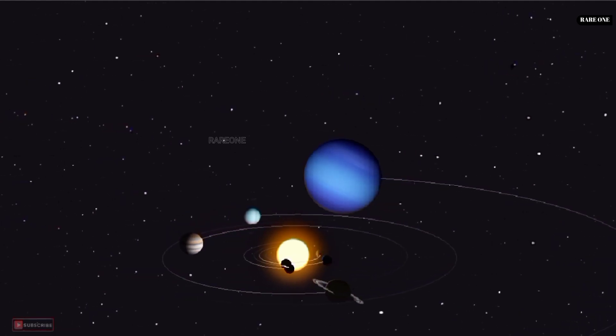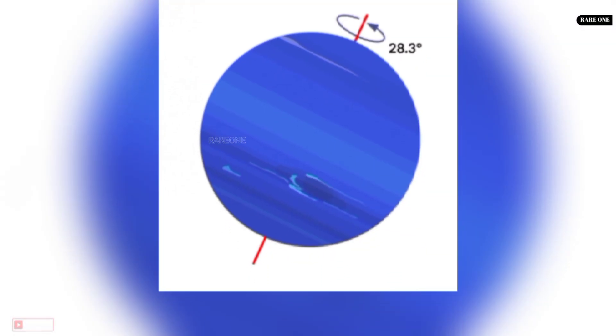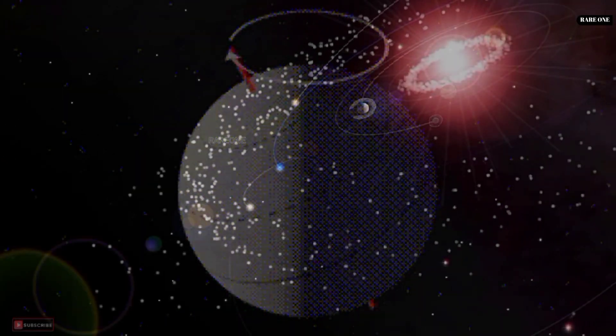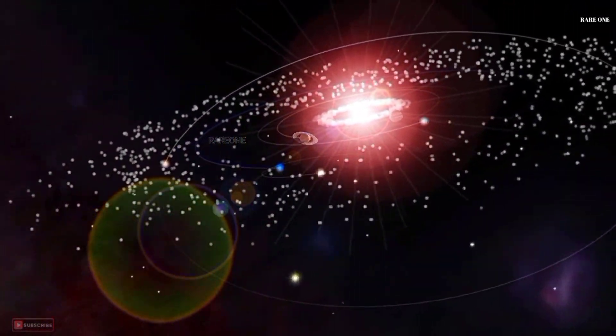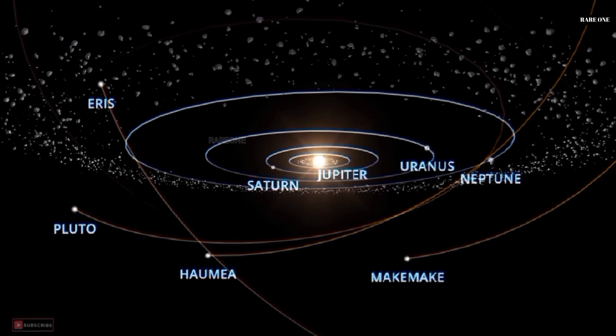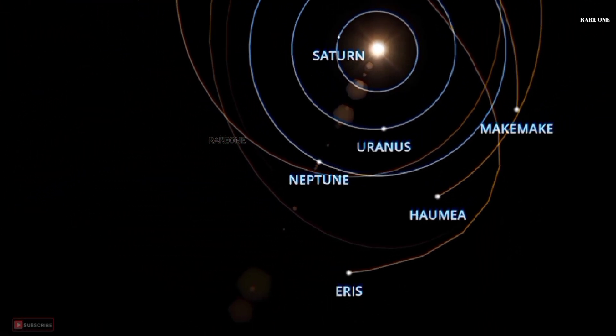Just like Earth, Neptune experiences seasons due to its axial tilt of 28 degrees, but each of its four seasons drags on for over 40 years. Sometimes Neptune is even farther from the Sun than the dwarf planet Pluto due to Pluto's eccentric orbit. However, a repeating pattern prevents collisions, with Pluto making two laps around the Sun for every three Neptune takes.